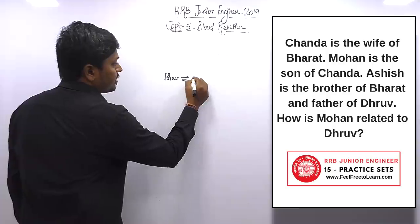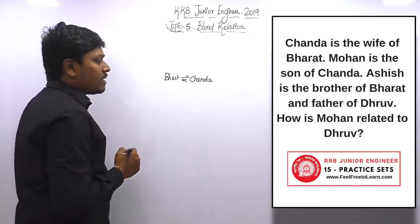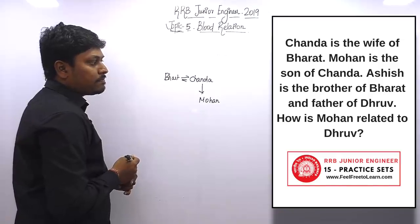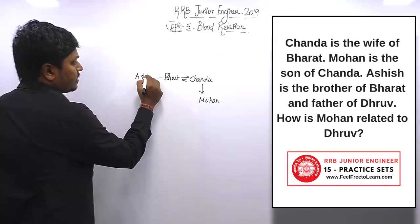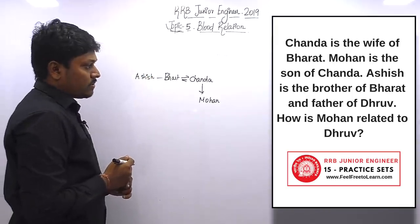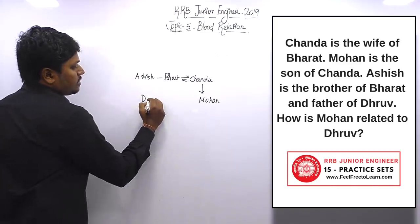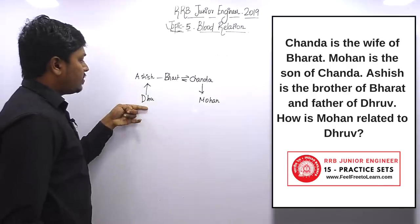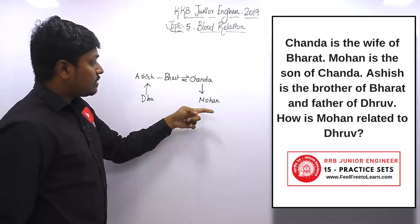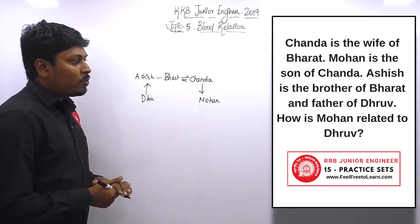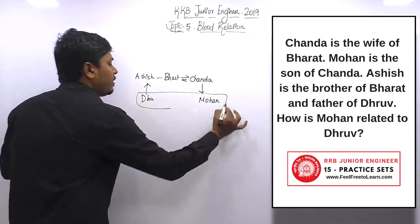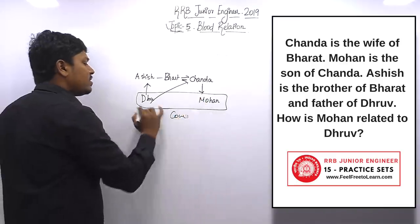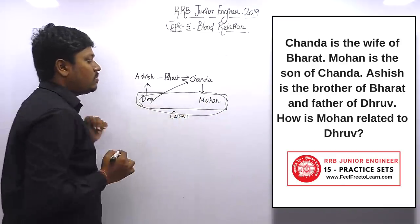Question number sixteen: Chanda is the wife of Bharat. Mohan is the son of Chanda. Ashis is the brother of Bharat, and the father of Dhuru. The question is: how is Mohan related to Dhuru? Bharat and Ashis are brothers. Mohan is Bharat and Chanda's son. Dhuru's father is Ashis. From Dhuru, Chanda is the aunt, and Chanda's son is Mohan — so they are cousins. The answer is cousins.